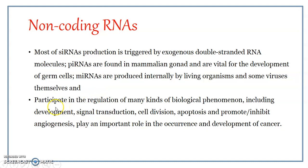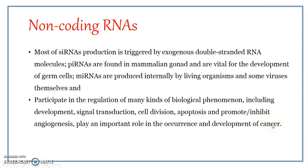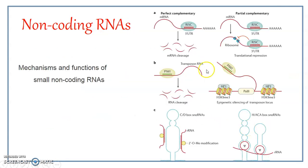The non-coding RNAs participate in the regulation of many kinds of biological phenomena including development, signal transduction, cell division, and apoptosis. They also promote or inhibit angiogenesis, and play a very important role in the occurrence and development of cancer. Angiogenesis — the formation of new blood vessels — is usually triggered during carcinogenesis, that is cancer formation. These two processes are being related by different kinds of non-coding RNAs.